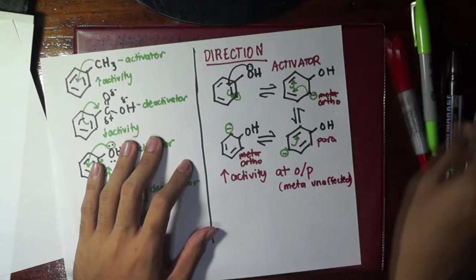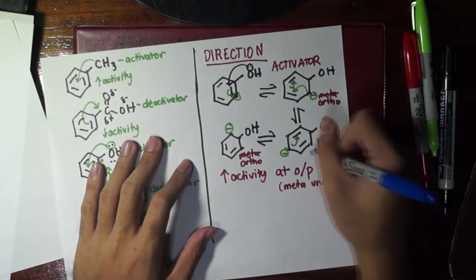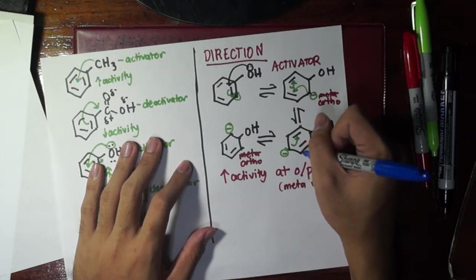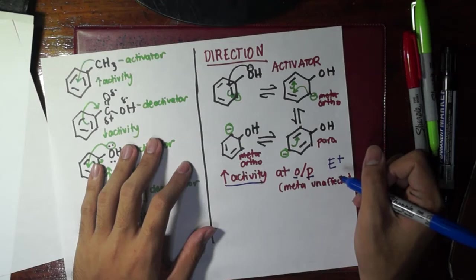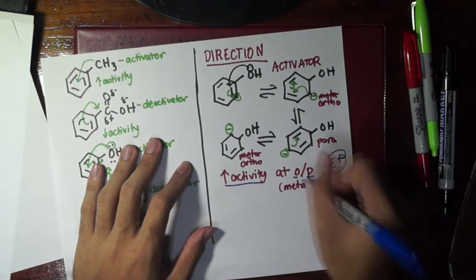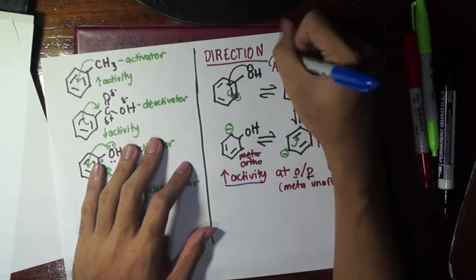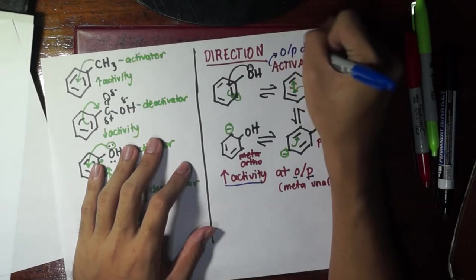So if an electrophile would attack, then most likely where would it go? Would it go to the meta wherein there's not much electrons, or would it go at ortho or para where there is a lot of activity? Then of course the electrophile will go either ortho or para. That's why activators are usually ortho-para directors.